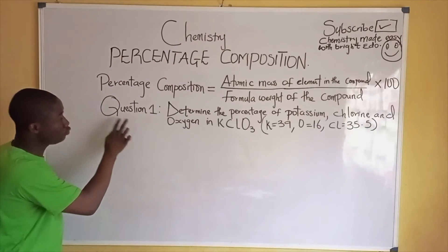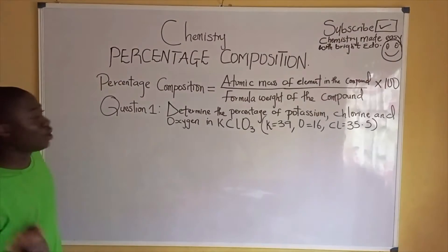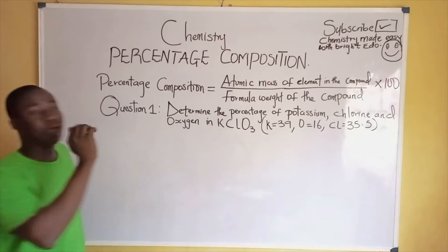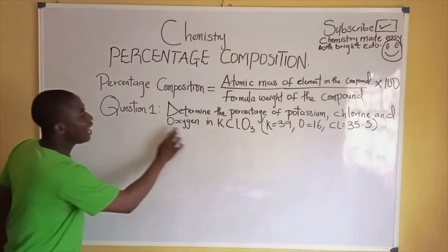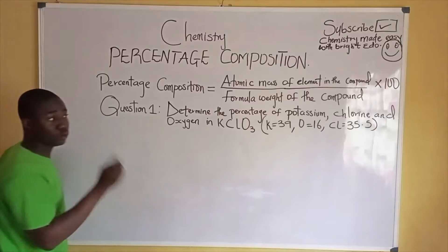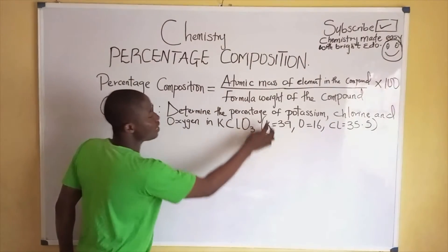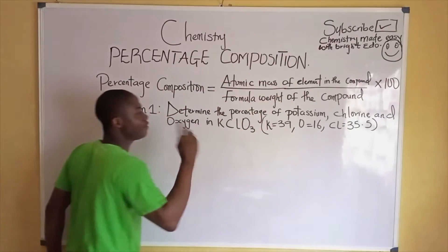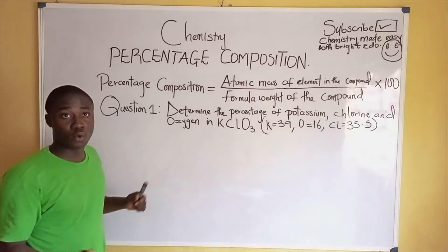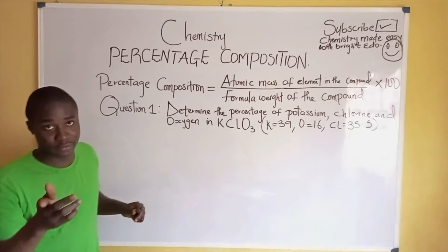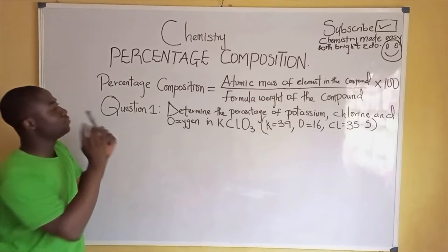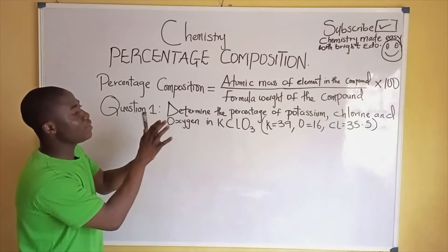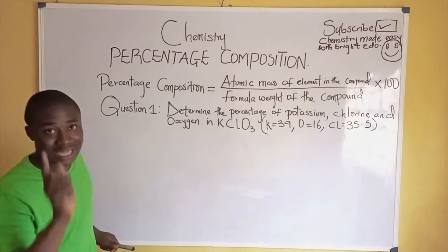This is the question written on the board. The question says: determine the percentage of potassium, chlorine, and oxygen in KClO₃, given the atomic masses of the elements to be: potassium is 39, oxygen is 16, and chlorine is 35.5. Now let's determine the percentage composition of each element in this compound, KClO₃.